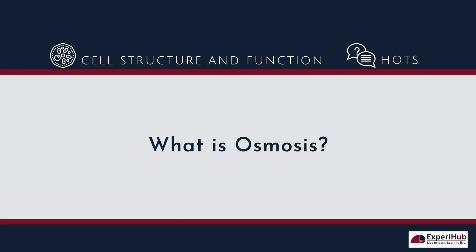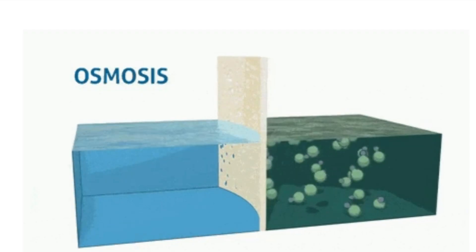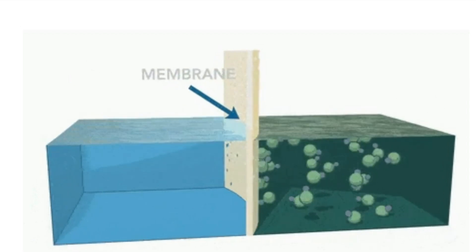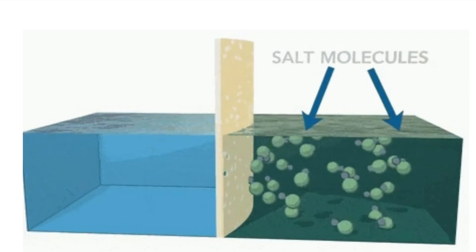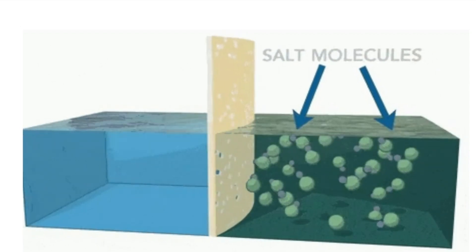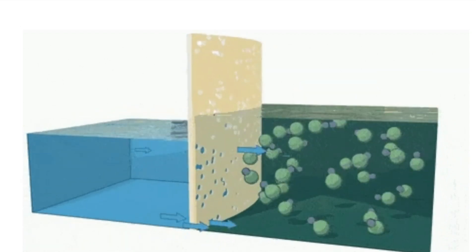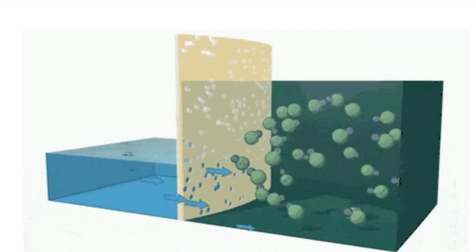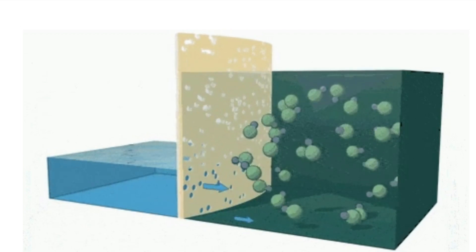What is osmosis? Osmosis is a process by which the molecules of a solvent pass from a low concentration solute to a high concentration solute through a semi-permeable membrane. The process continues until the quantity of fluid is balanced or equalized in both regions.